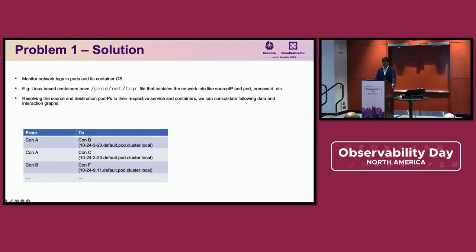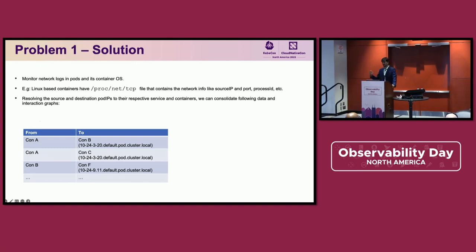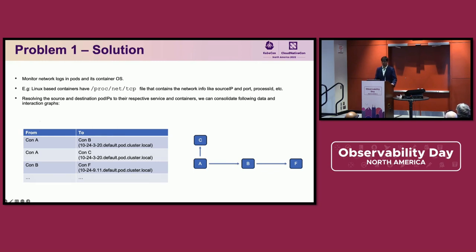The solution is to observe and monitor network logs. In any operating system, network logs contain information about network operations. For Linux containers, you can use proc/net/tcp files, which have network information including source IP, destination IP, and the processes involved. Once you resolve these IPs to fully qualified domain names of Kubernetes services, you get a span of the network call. Aggregating these forms a directed graph of interactions — and there you have the flows. Several open-source and third-party tools do this out of the box using this same logic.